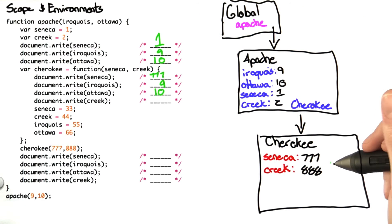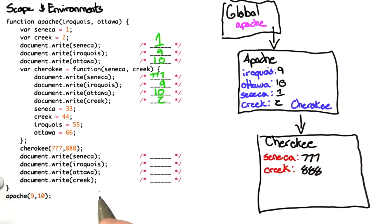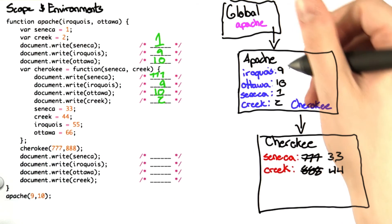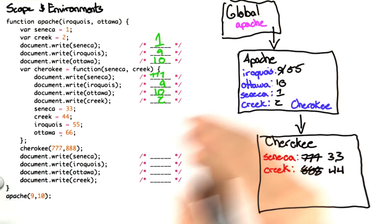And lastly, we're going to print out Creek. Same deal, not defined in Cherokee, but is in Apache. Now we do some modifications. We set Seneca to 33. We set Creek to 44. We set Iroquois to 55. It's not in Cherokee, so we're changing the value of Iroquois in the Apache environment. Then we set Ottawa.